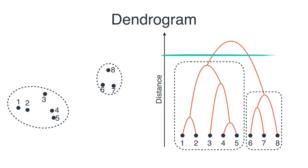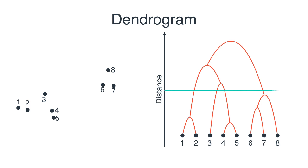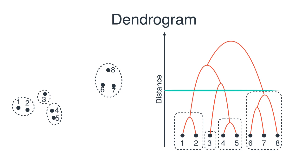We decide where to cut the dendrogram based on the distance threshold or desired number of clusters. Cutting at a certain height gives two clusters: one containing points one, two, three, four, and five, and another containing six, seven, and eight. If we want four clusters, we cut at a lower height, giving clusters of one–two, three alone, four–five, and six–seven–eight. Even with billions of points in a thousand-dimensional space, the dendrogram is still a two-dimensional figure, and we can easily make decisions on it. That's hierarchical clustering in a nutshell.